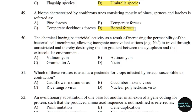50th question: The chemical having bactericidal activity as a result of increasing the permeability of the bacterial cell membrane, allowing inorganic monovalent cations to travel through unrestricted and thereby destroying the ion gradient between the cytoplasm and extracellular environment. Correct answer: Option C — Gramicidin A.